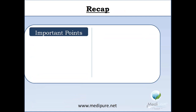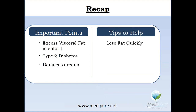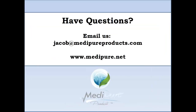To recap, some important points to remember: excess visceral fat is the culprit because it can lead to type 2 diabetes and organ damage, with many secondary effects. Tips to help include losing fat quickly but doing it the right way, keeping nutrition key, avoiding drugs if possible, learning to manage stress wisely, and becoming more active. Thanks for your time today. If you have any questions, please feel free to email me directly at jacob@metapureproducts.com. Thank you.